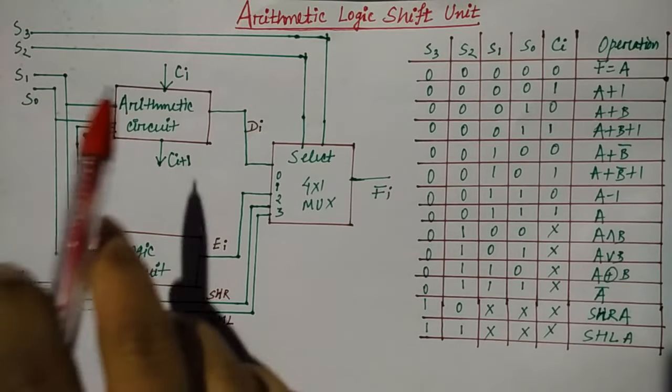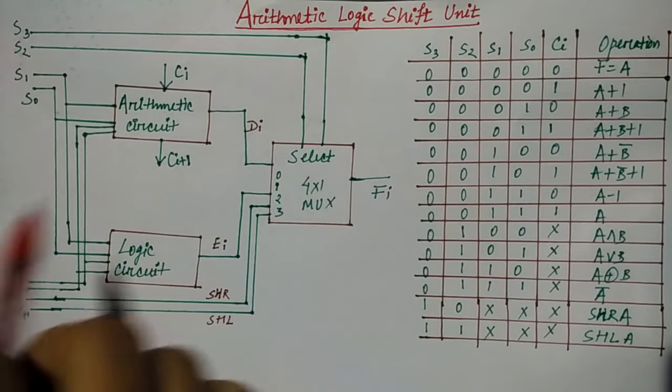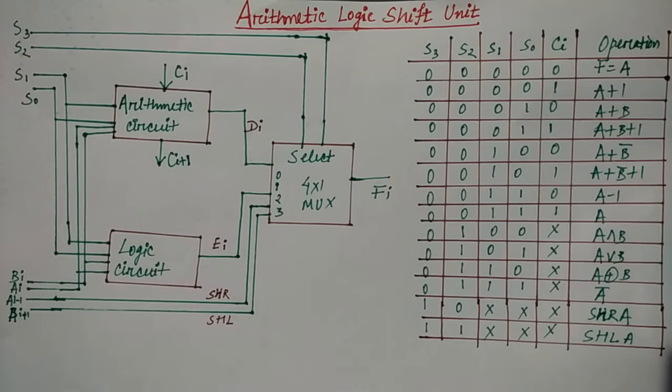In this diagram, there is an arithmetic circuit, a logic circuit, a multiplexer, and different selection lines and input lines.